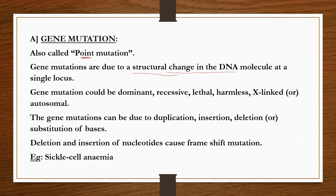Autosomal means the mutation may occur in the autosomes, so the mutation may occur in the autosomes or may occur in x-linked genes.